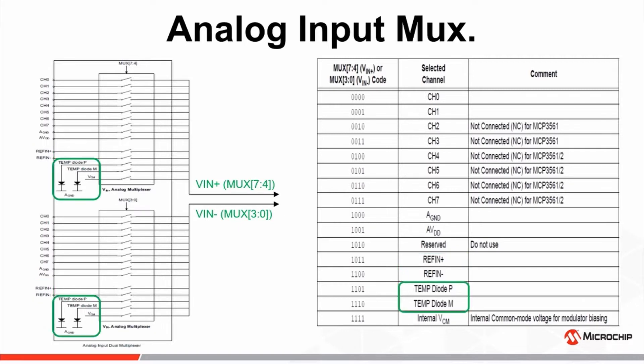The last diagnostic feature we want to highlight is the internal temperature sensor, which is realized using a set of internal diodes. When biased via an on-chip current source controlled by the input multiplexer, it will provide a measurement of the ambient temperature of the environment surrounding the device. When biased via the on-chip current sources, the two temperature diodes will exhibit a difference in current densities, which yield a voltage directly proportional to the ambient temperature around the device.